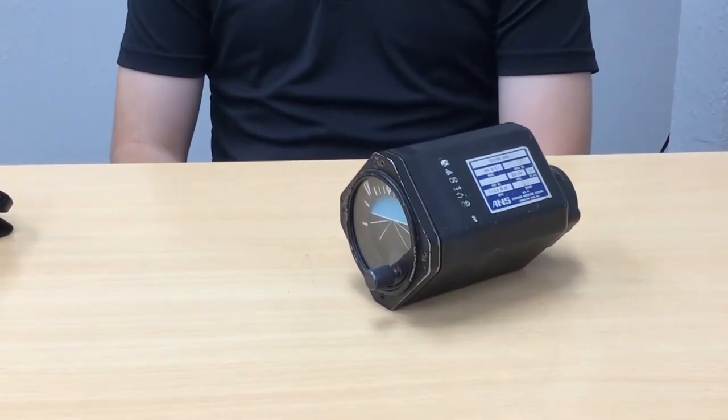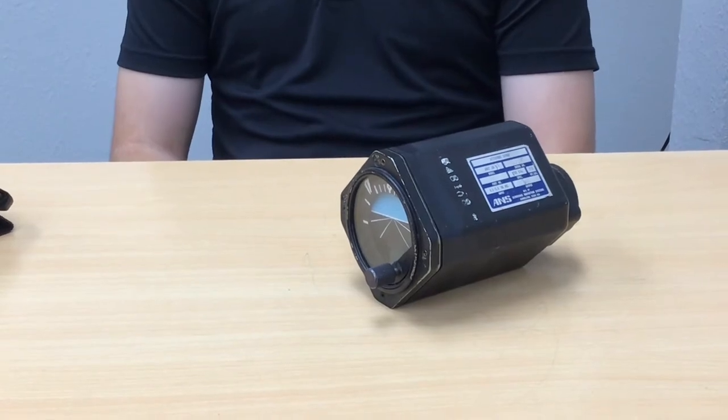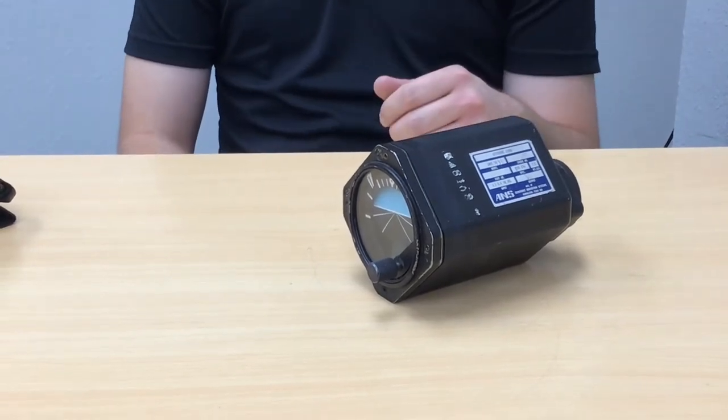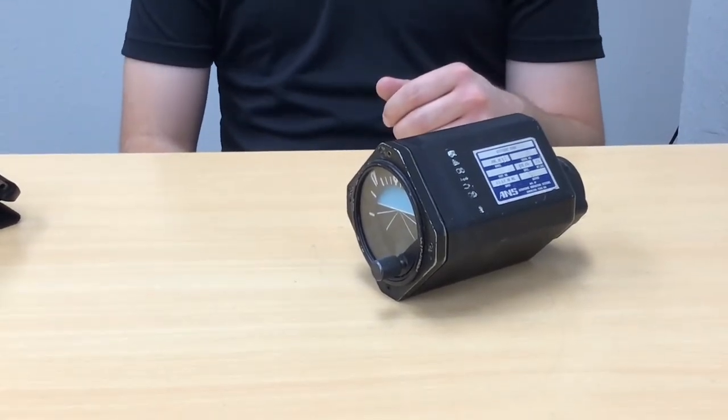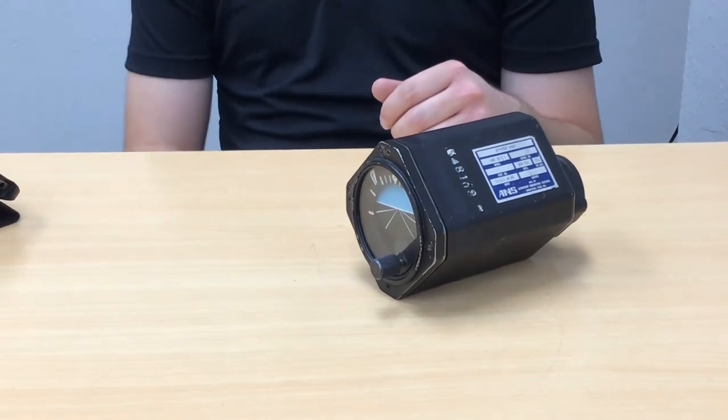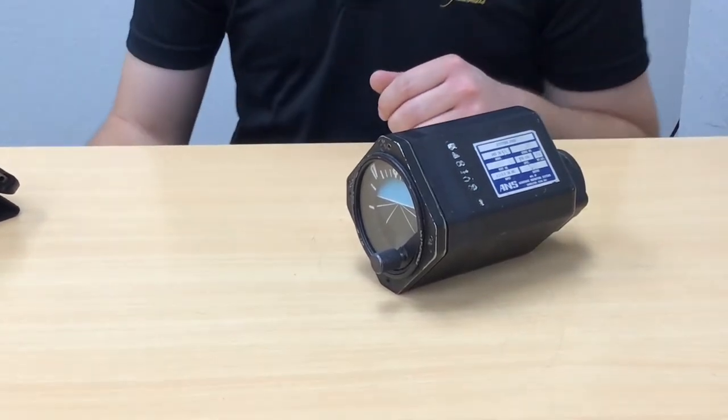We get spoiled with the G1000 display and the AHARS, but it's also important to understand how the standby and vacuum driven attitude indicator works. Especially if you want to get your instrument rating or if you want to fly anything with a traditional six pack cockpit layout.